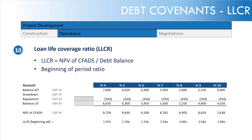Also worth mentioning is the project life coverage ratio — a slightly different ratio. The CFADS is not just taken over the loan life, i.e. the tenor of debt. It's also taken over the debt tail, so you get the total project cash flows over the project life. That number should be bigger. You then divide it by the debt balance, so the PLCR should be bigger than the LLCR.